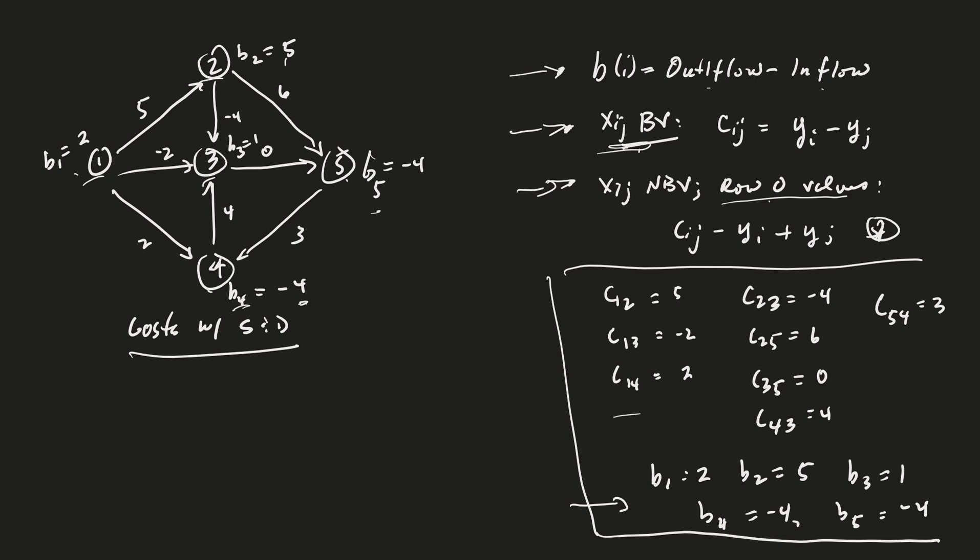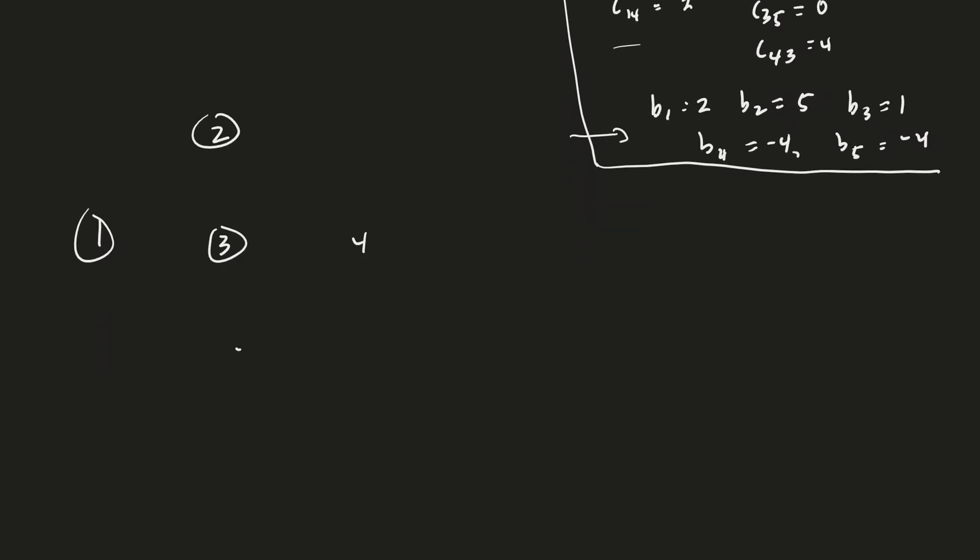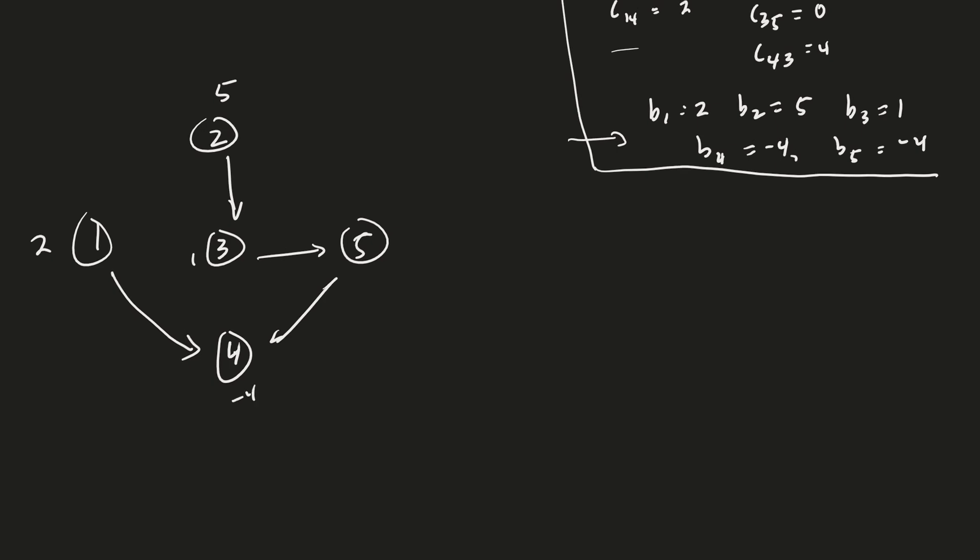Now, the way that the network algorithm starts is we need a spanning tree, right? So let me just write one down. One, two, three, four, five. And now the edges are going to go straight down, over, down, and down on this side. Good. And just to remind you, the Bs are 2, 5, 1, and then minus 4 and minus 4.